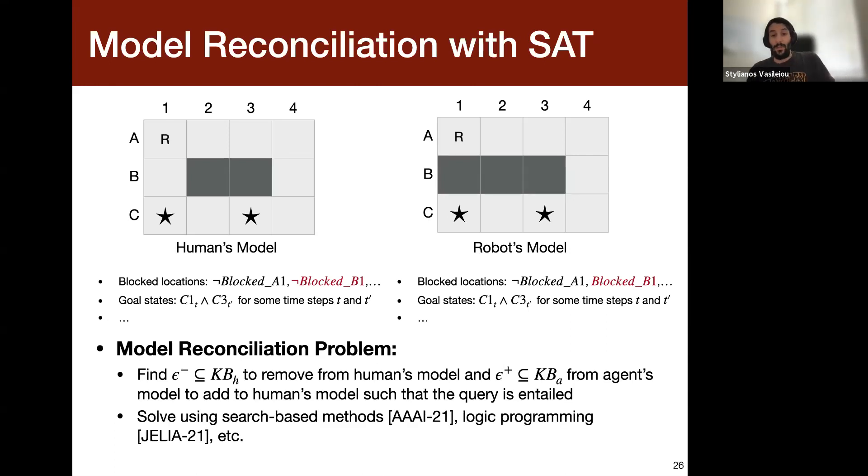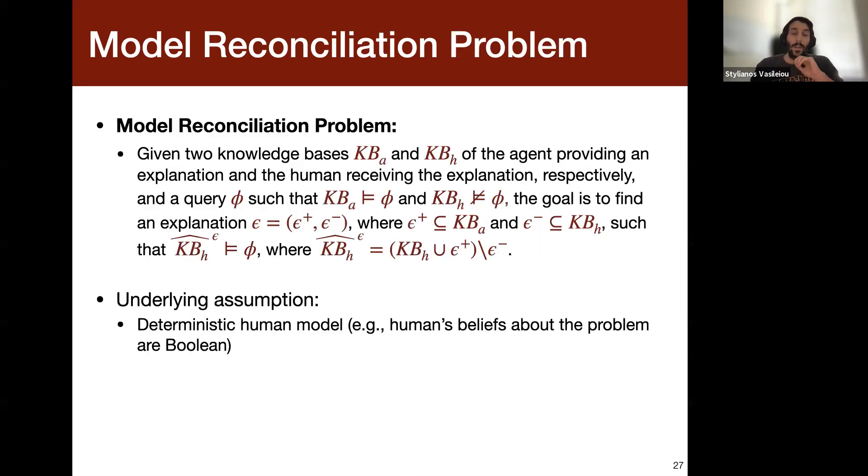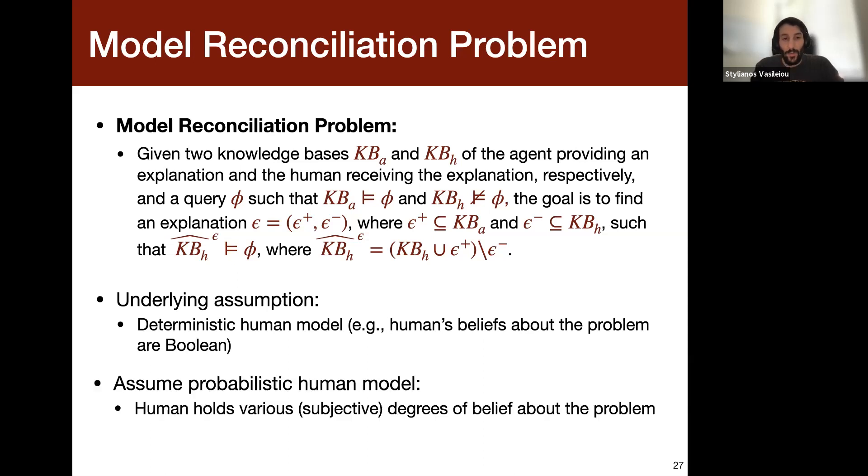And we have solved this using search-based methods. We have a paper in IJCAI and also using logic programming in ICLP. And this was led by Son, the logic programming one. Now, one of the underlying assumptions in model reconciliation in general, in our formulation, is that the human's model is deterministic. And what I mean by that is that the human's beliefs are Boolean. So either the human believes that a state exists or it doesn't, or an action exists or it doesn't. So it's zero and one.